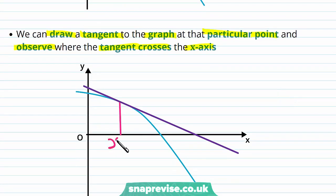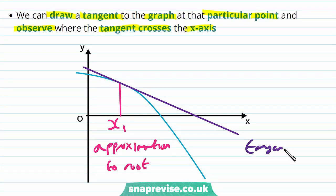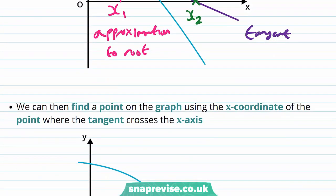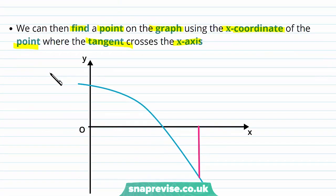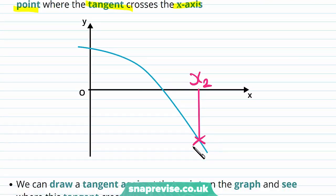So we have our x1 here, which is our approximation to the root. We can draw a tangent to the curve at the point x1 and observe the point here, say x2, where the tangent crosses the x-axis. We can then find a point on the graph using the x-coordinate of the point where the tangent crosses the x-axis, and then find the point corresponding to this on the graph.